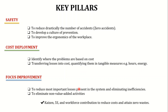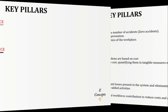The third pillar is Focus Improvement, which aims to reduce the most important losses in the system and eliminate inefficiencies — specifically non-value-added activities. Lean manufacturing techniques such as Kaizen and 5S contribute here, along with workforce involvement to reduce costs and attain zero waste.